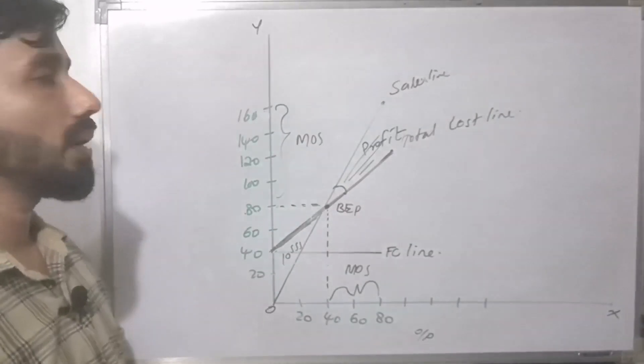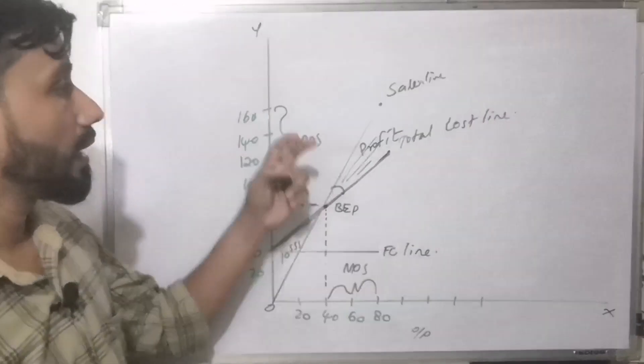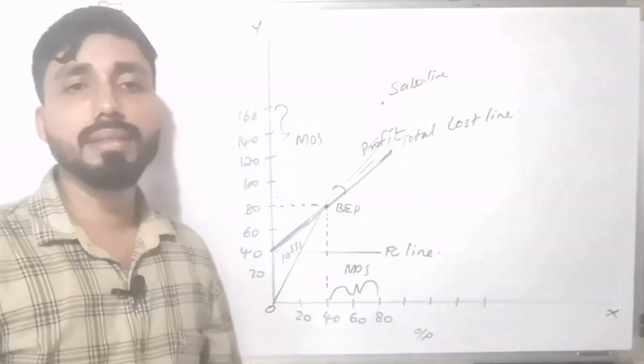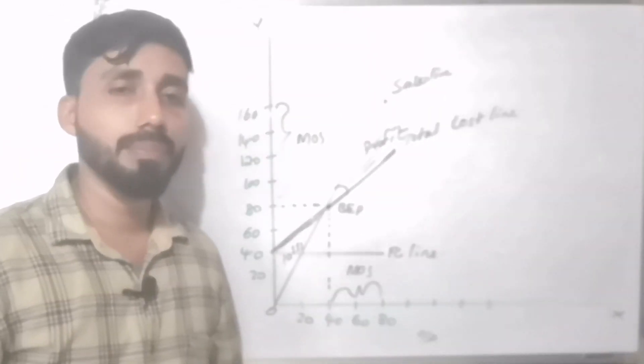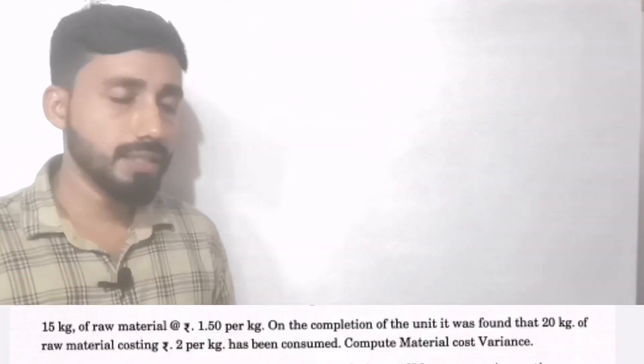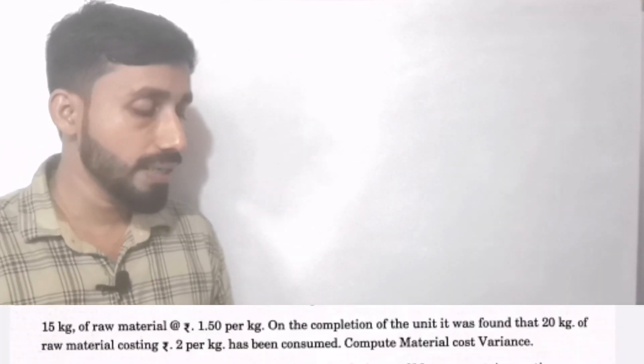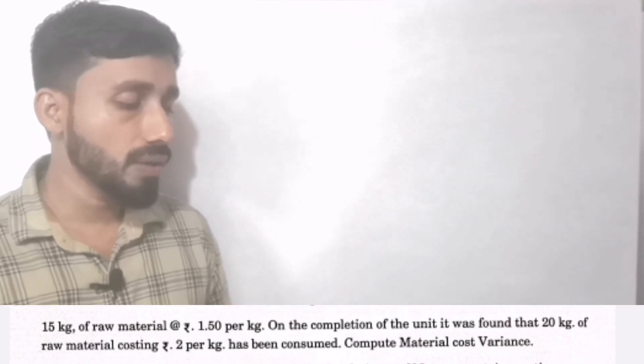Beyond the BEP at 80,000 units we can identify the Margin of Safety (MOS). The chart shows the fixed cost line, the total cost line, the angle of incidence, and the break-even point. This completes the break-even chart.